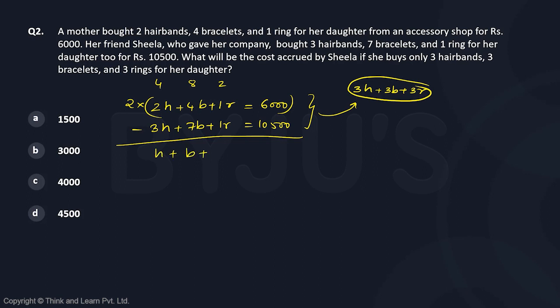That gives us h + b + r = 12,000 minus 10,500, which is 1,500. We need three times this amount, so three times 1,500 is 4,500. This is a very standard question from the topic of equations.